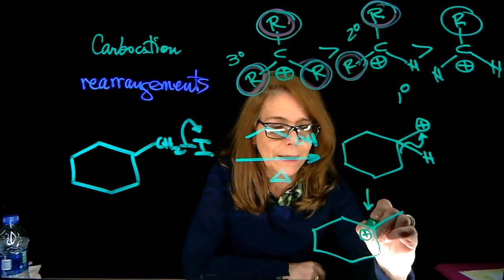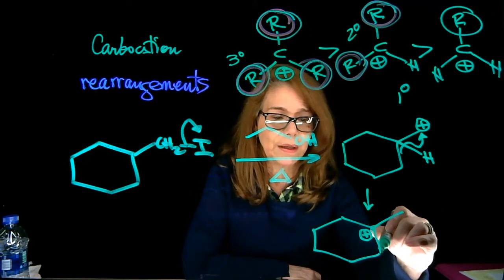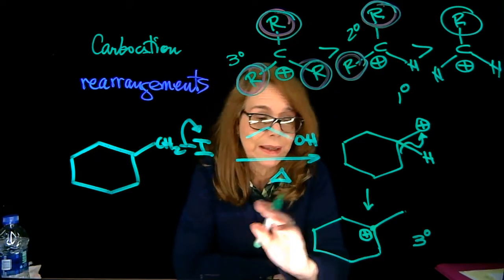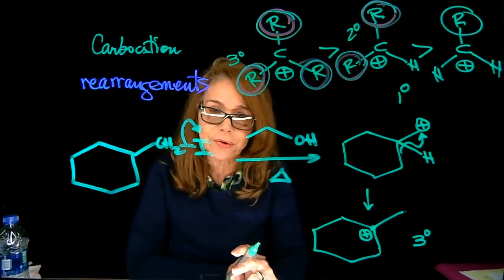Now the carbocation is, notice that we have one R group over here, here, and here. So it is the tertiary carbocation. This reaction can happen because after rearrangement, we form a tertiary carbocation.